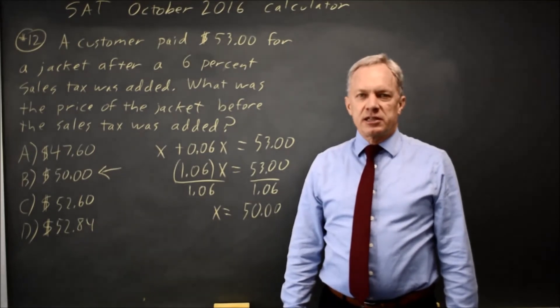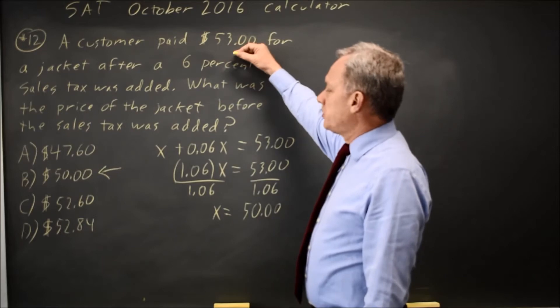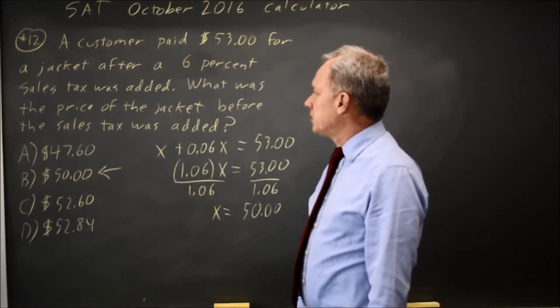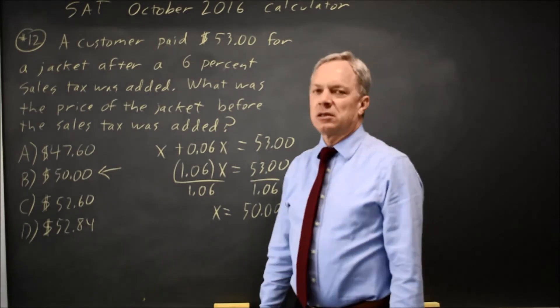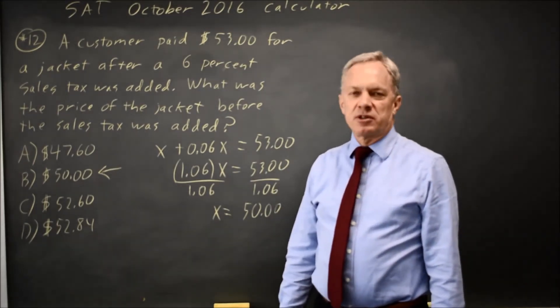Make sure you take the sales tax in the correct direction. If you pay 53 including tax, your original price will be less. And it will be less by an amount that is 6% of the original price.